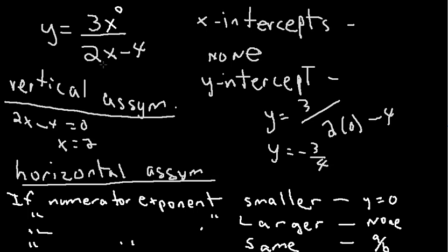Here, if my numerator exponent is smaller, then my horizontal asymptote is y equals 0. Because this graph is going to continually get closer and closer to 0, but never touch.